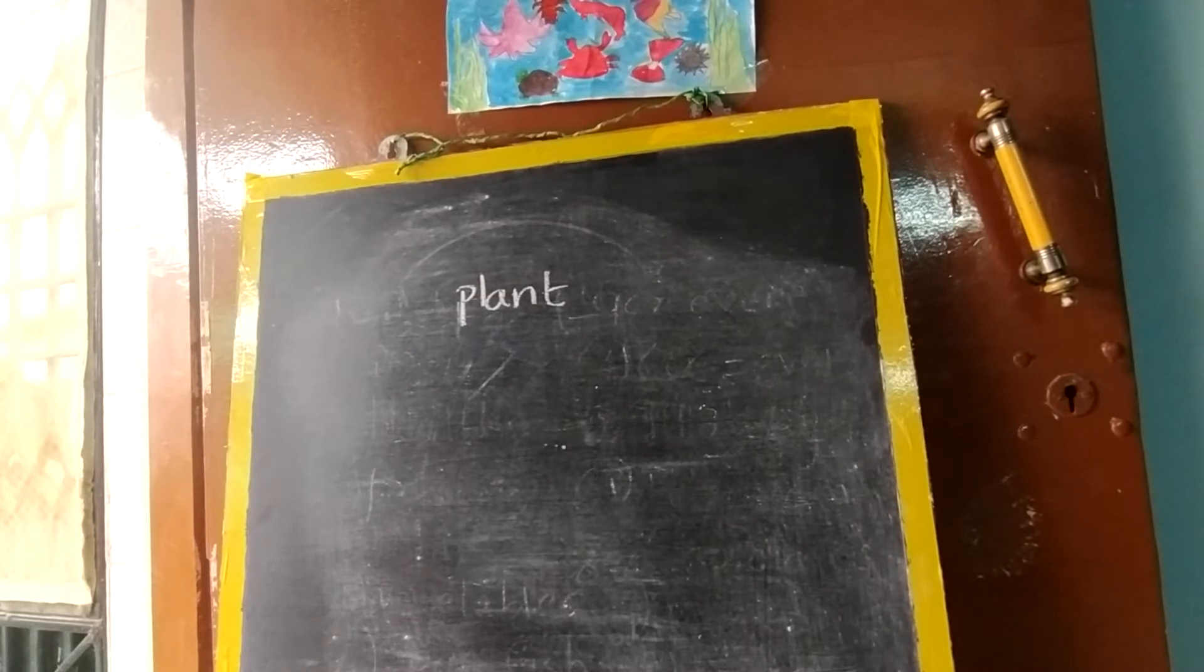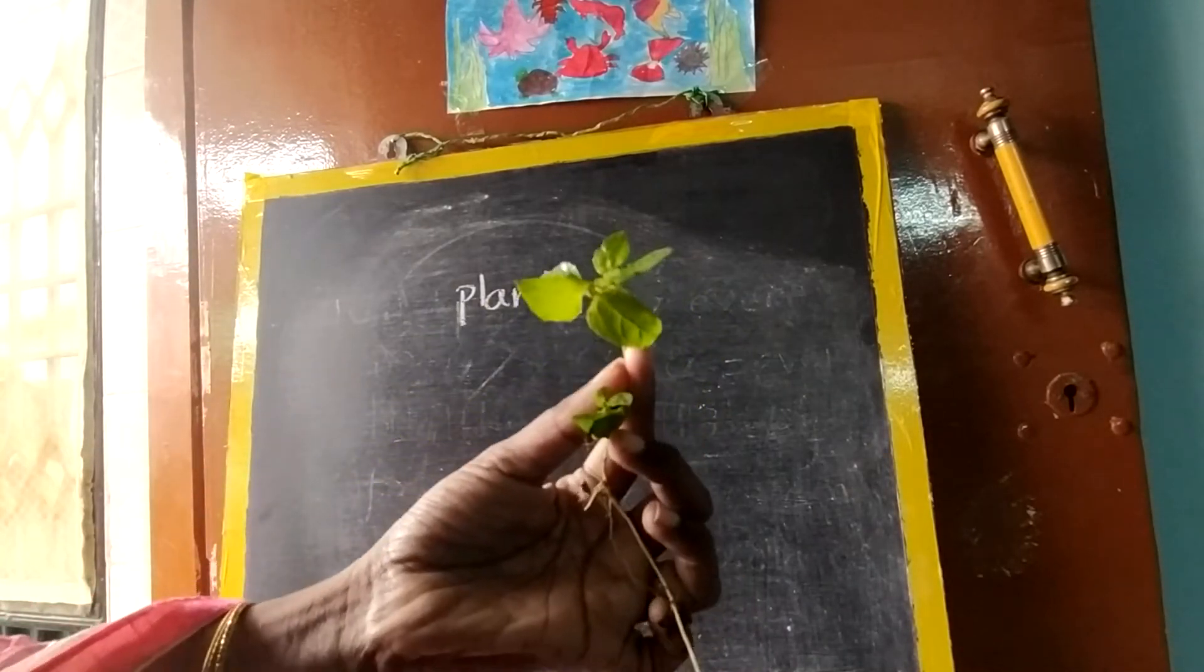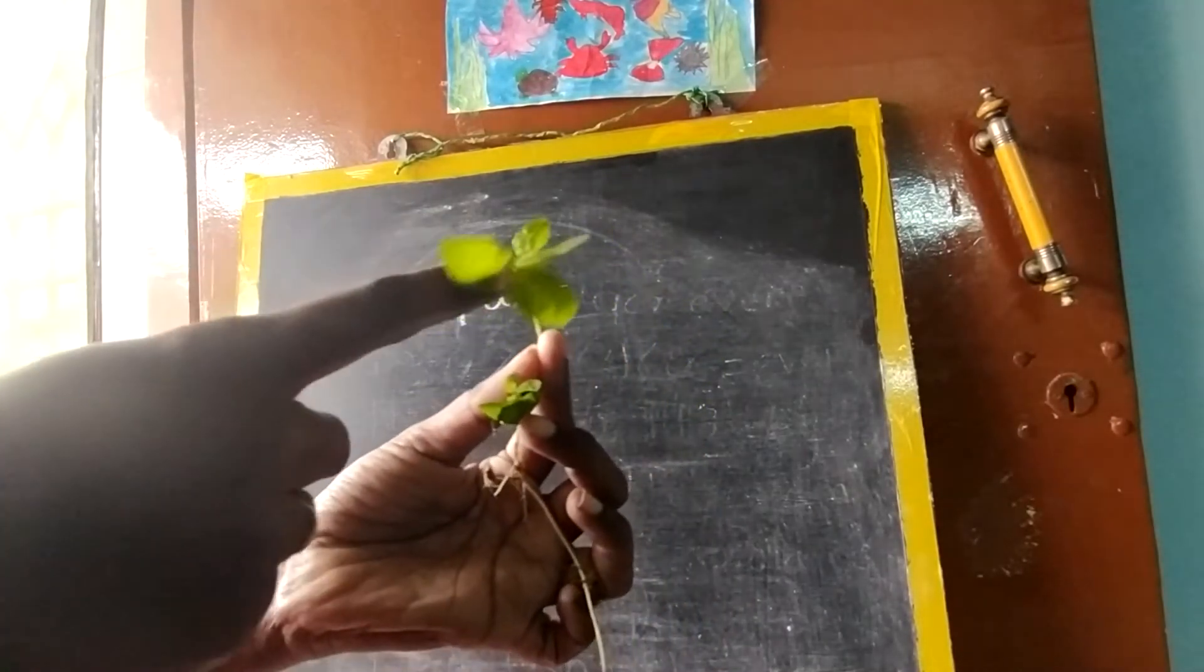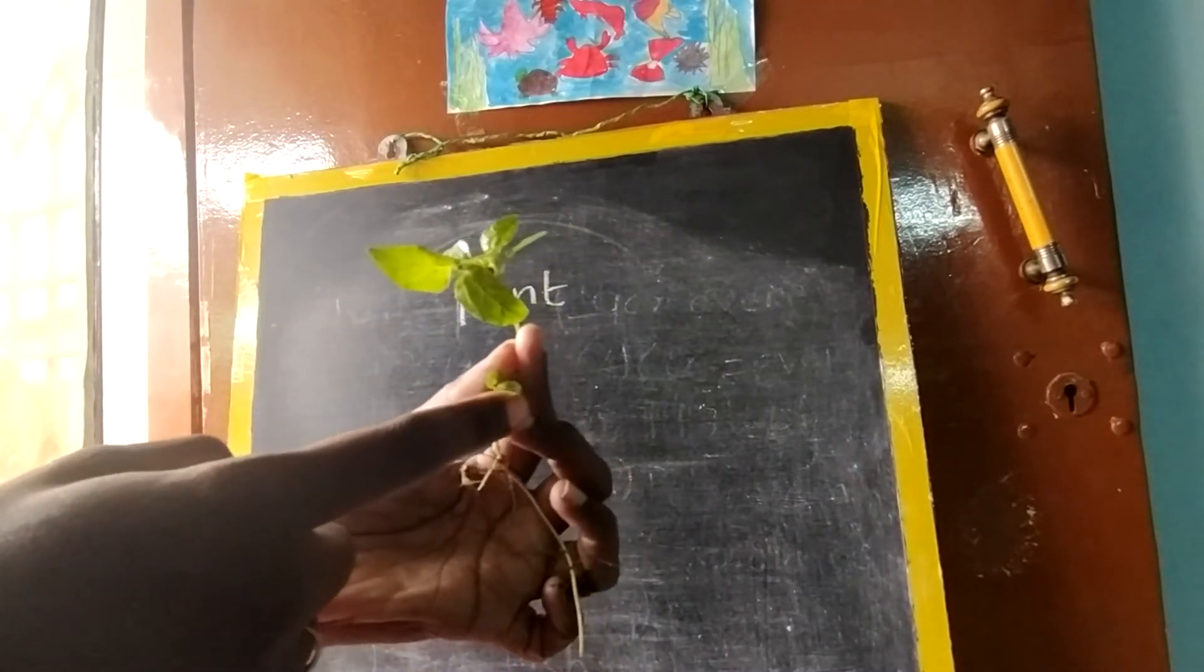So now we are going to learn about plant. Now see, I am showing you a plant, you can see right, what color it is in? Green, complete green color.